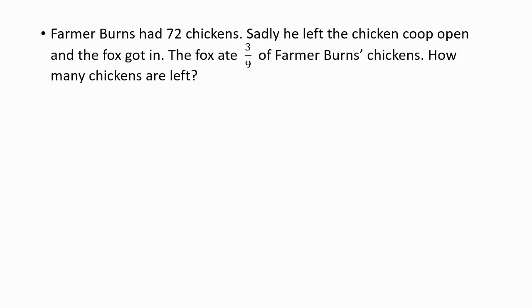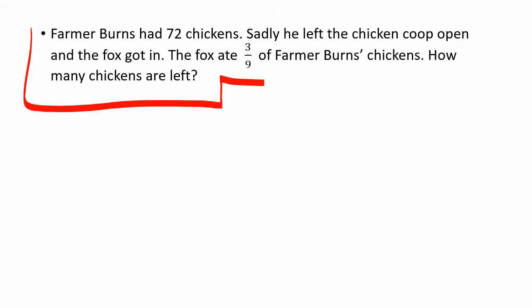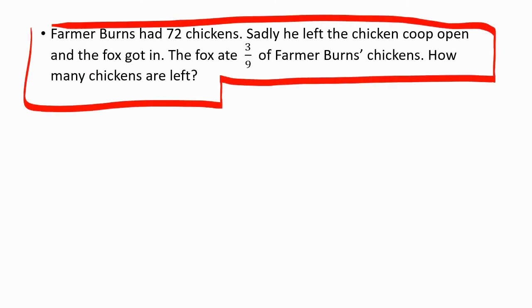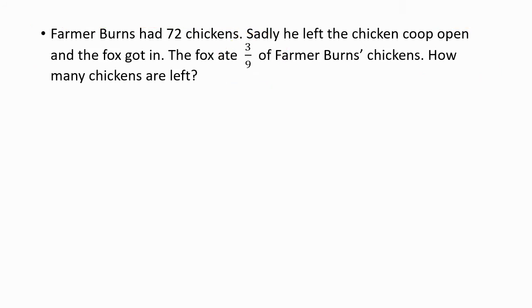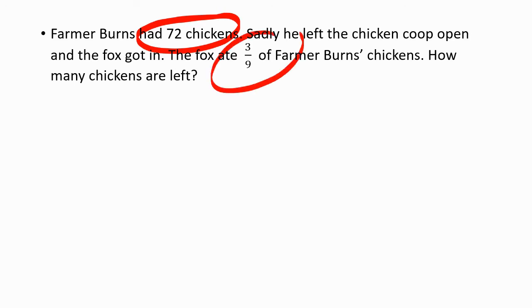Let's have a look at the first one. Farmer Burns had 72 chickens. Sadly, he left the chicken coop open and the fox got in. The fox ate three-ninths of Farmer Burns' chickens. How many chickens are left? For starters, let's highlight the key information: Farmer Burns has 72 chickens, the fox ate three-ninths of his chickens, and we need to find how many chickens are left.